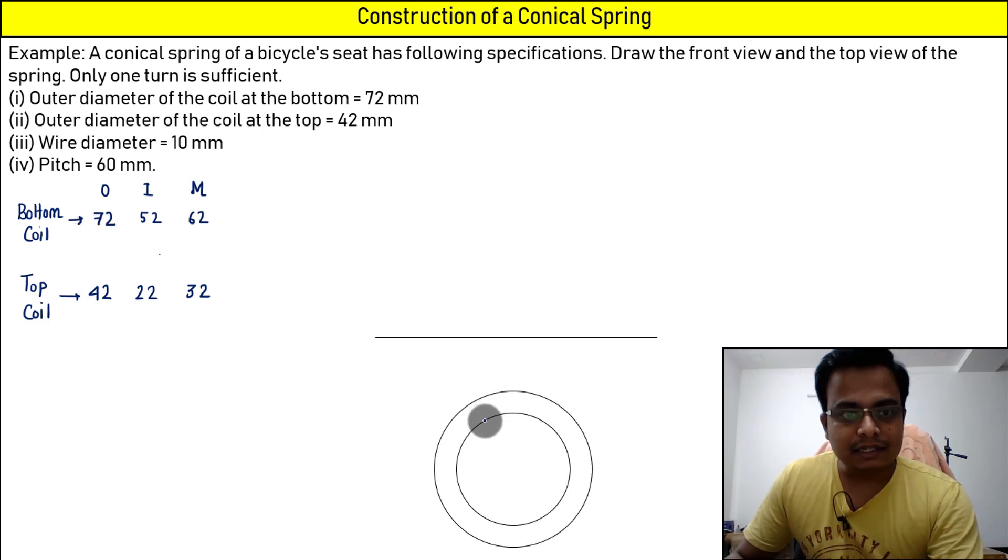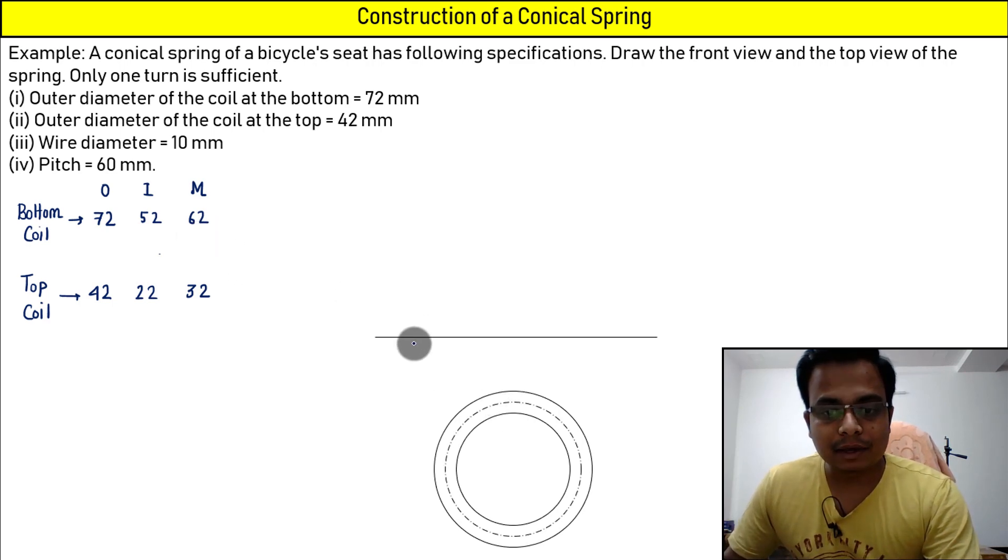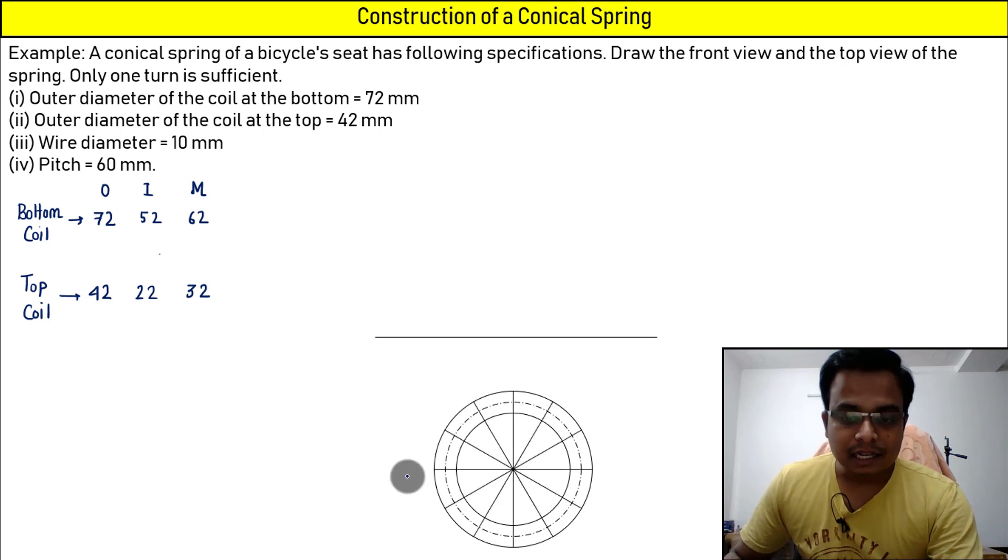Once again, bottom coil's top view has been made. So this outer one is having a diameter of 72, that means radius 36. Inner one is having a diameter of 52. There you go. Now you have got to make a circle again in between these two, exactly in between these two, having a diameter of 62. There you go. Now let's do 12 divisions. Let's mark them from 1 to 12.